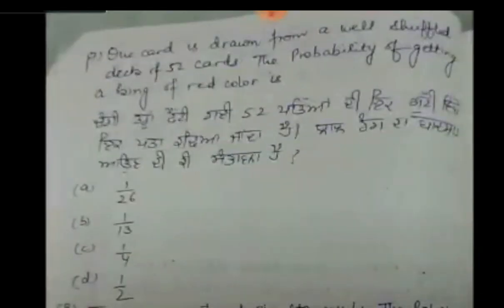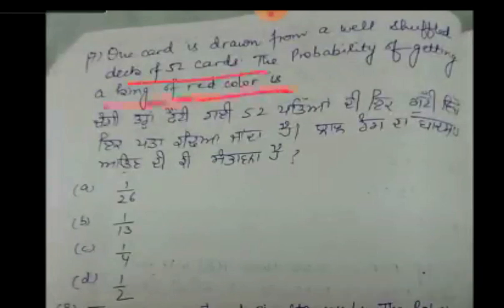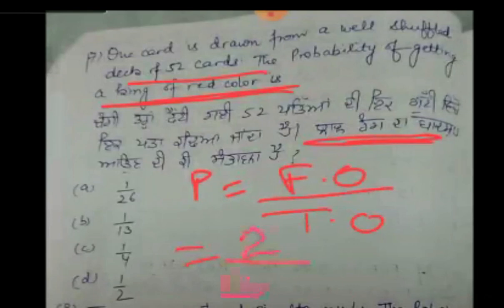Come to the 7th sum. One card is drawn from a well-shuffled deck of 52 cards. The probability that the card is a red king. Using the probability formula: favorable outcomes over total outcomes. Favorable outcomes — red kings — are 2. Total outcomes are 52. So the answer is 2/52, which simplifies to 1/26. Our answer is 1 by 26.